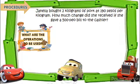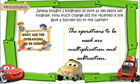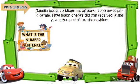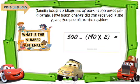Number 4: what are the operations to be used? The operations to be used are multiplication and subtraction, as this problem needs two operations to get the exact solution. What is the number sentence? We need to multiply first 190 pesos times 2 kilograms, then subtract the result from 500. Therefore, the equation is 500 minus (190 times 2).